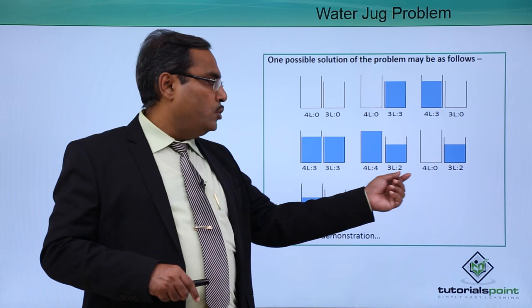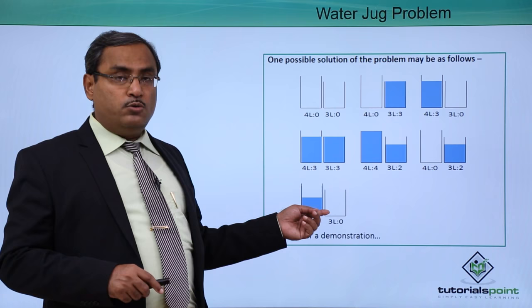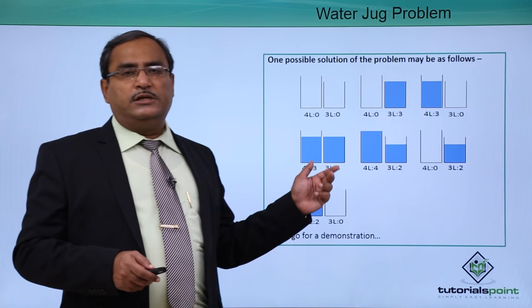Now pour all the water from the 4-litre jug onto the ground so it becomes empty, giving state (0, 2). The 3-litre jug, which has 2 litres, is poured into the 4-litre jug. We ultimately get state (2, 0) — and that is our goal state.